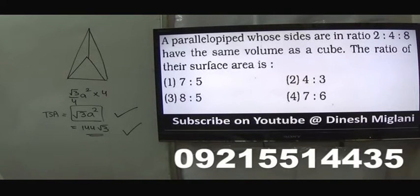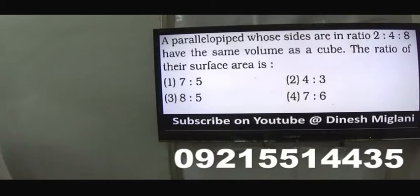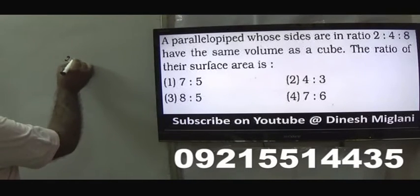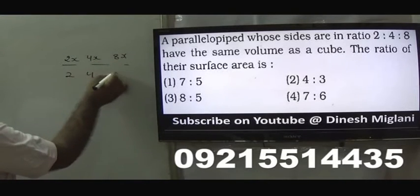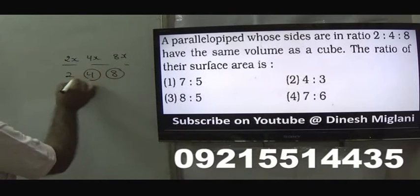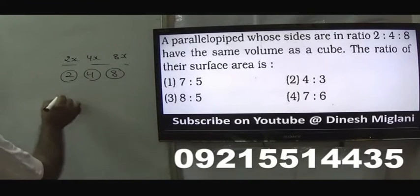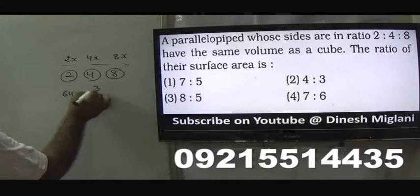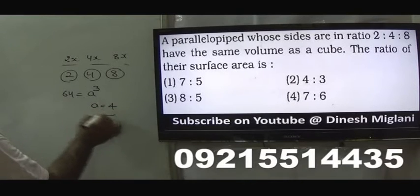Next question: a parallelepiped whose sides are in the ratio 2:4:8 has the same volume as that of a cube. Find the ratio of their surface areas. We take the sides as 2, 4 and 8. The volume is 2 × 4 × 8 = 64. Let the side of the cube be A. The volume is A cubed. So the side of the cube is 4.